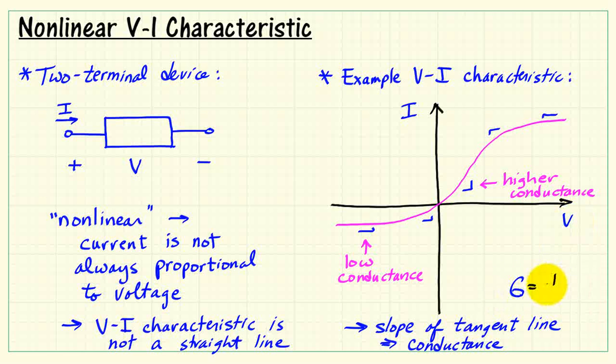Now remember that conductance is related to resistance in a reciprocal fashion. So low conductance means that we have high resistance in that region. And in this region, we have lower resistance.